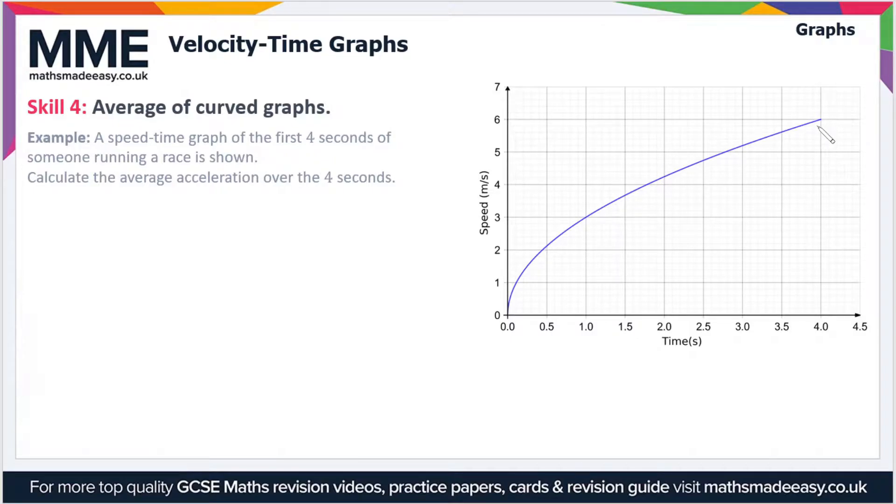To do that, we draw a straight line using a ruler between the start and end points of the line. We've basically averaged that curved line and made it straight. Now we find the gradient of the straight line we've drawn, because the gradient is the acceleration. So if we find this gradient, it'll give us the average acceleration.